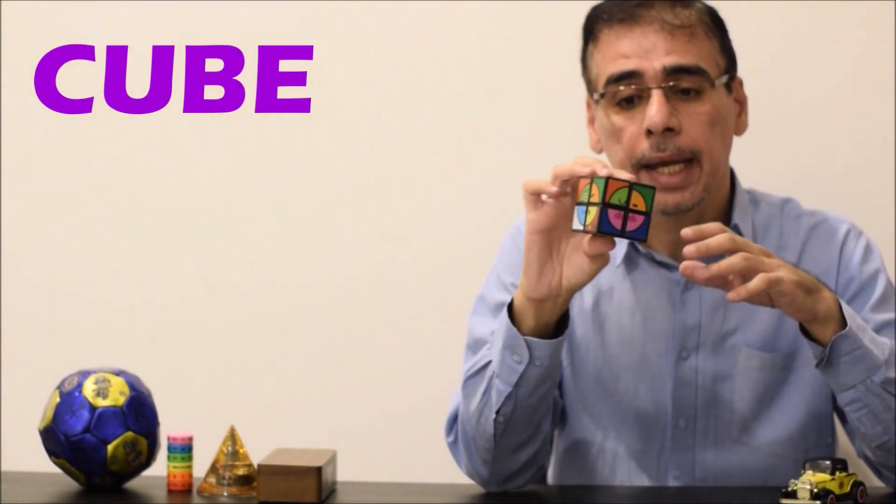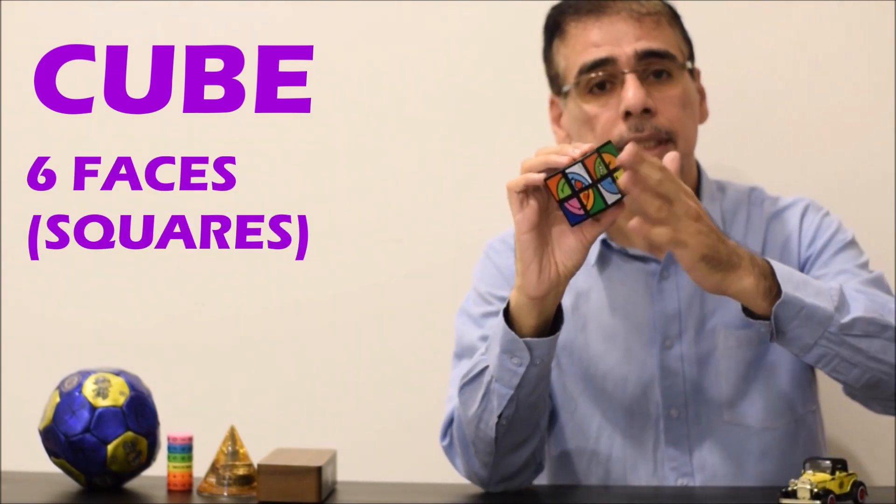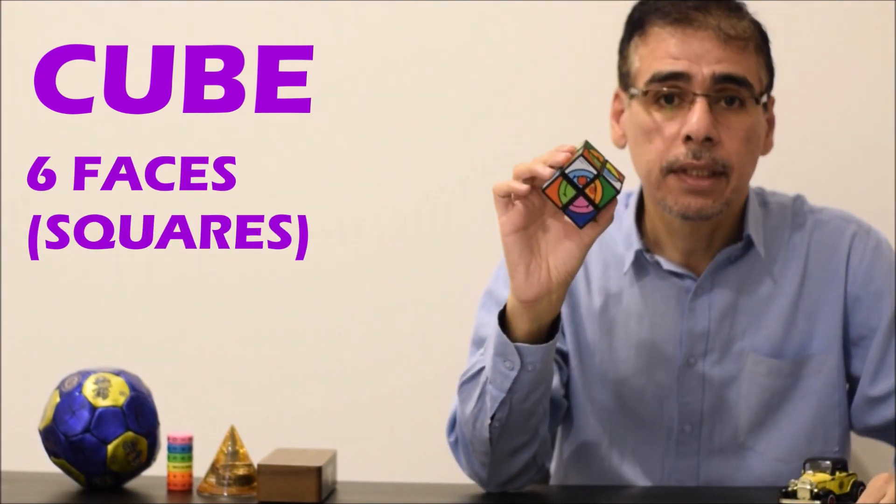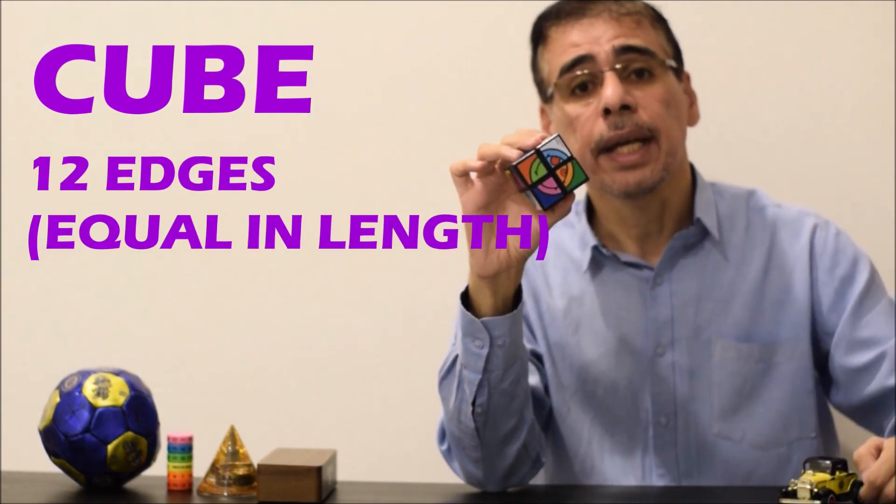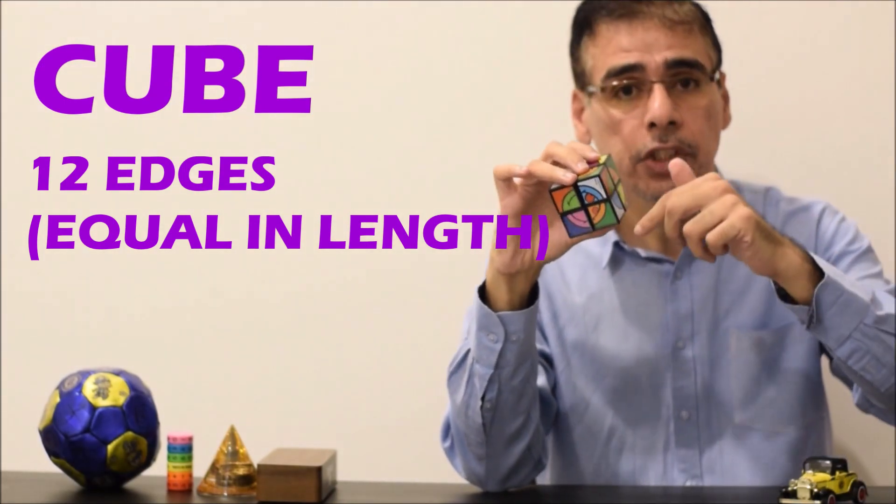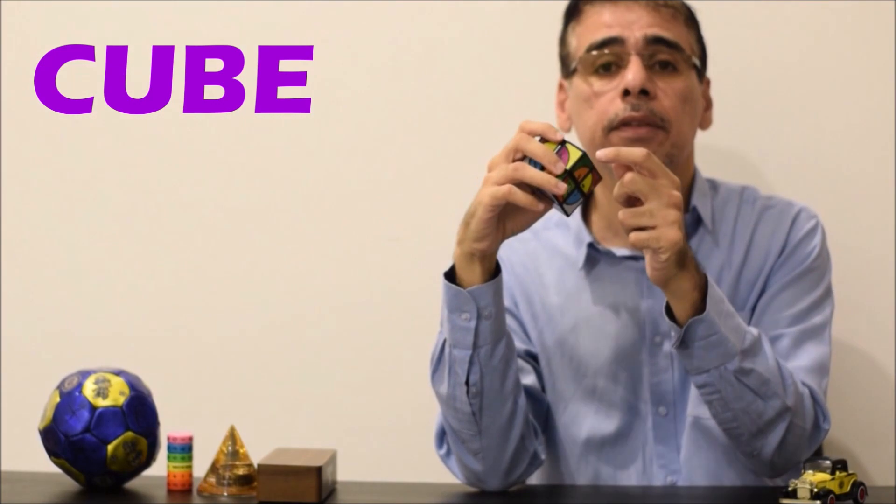The cube has 6 faces, and all the faces are the same. All the faces are squares. And it has 12 edges. All the edges are equal in length. And it has 8 vertices.